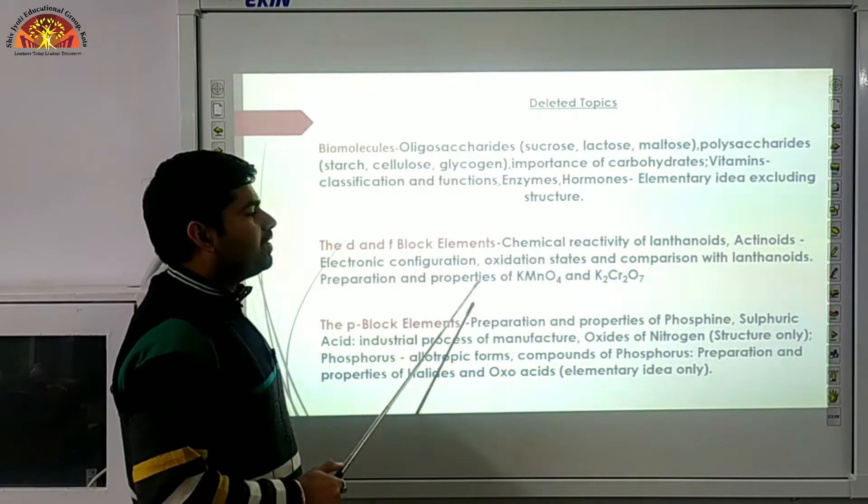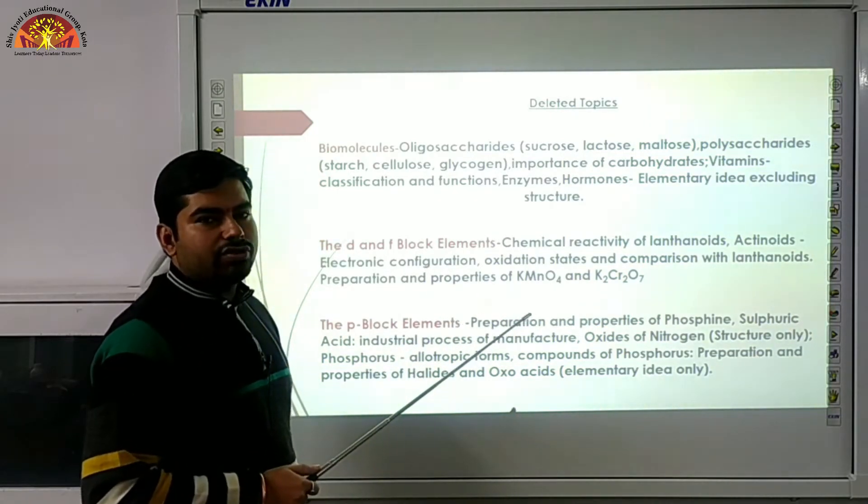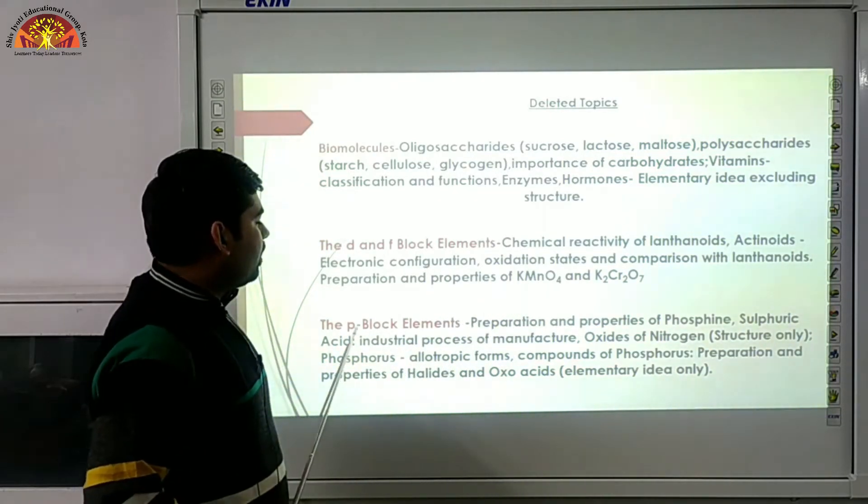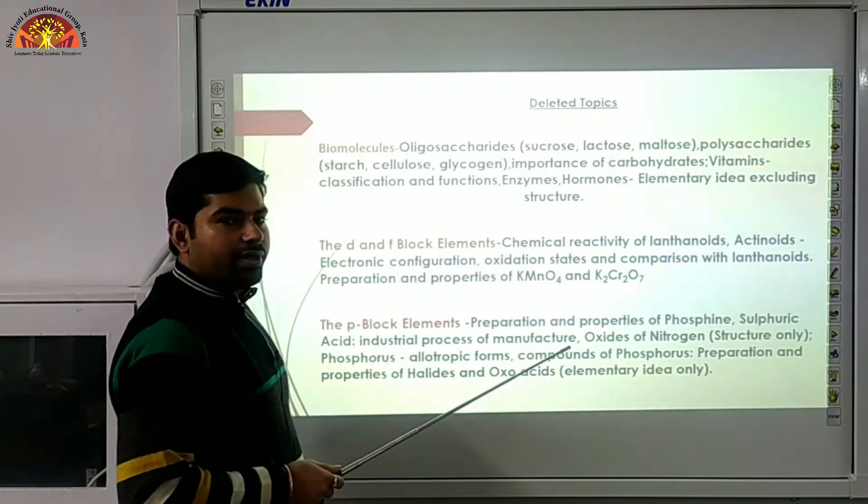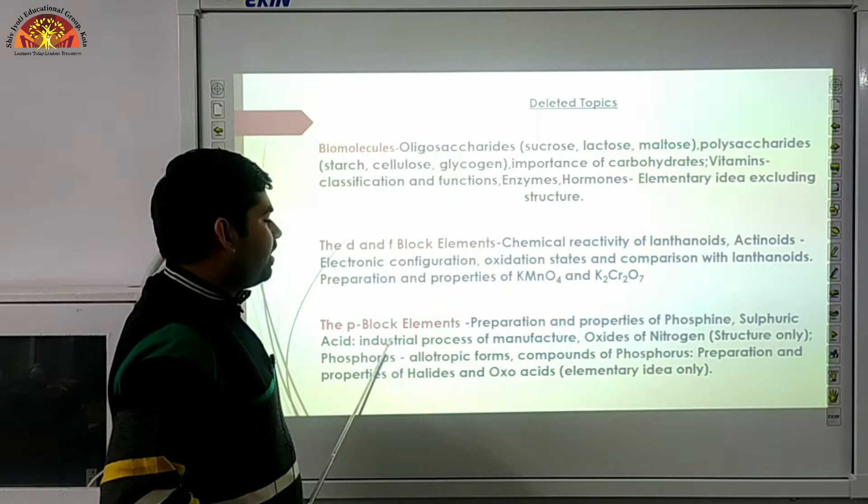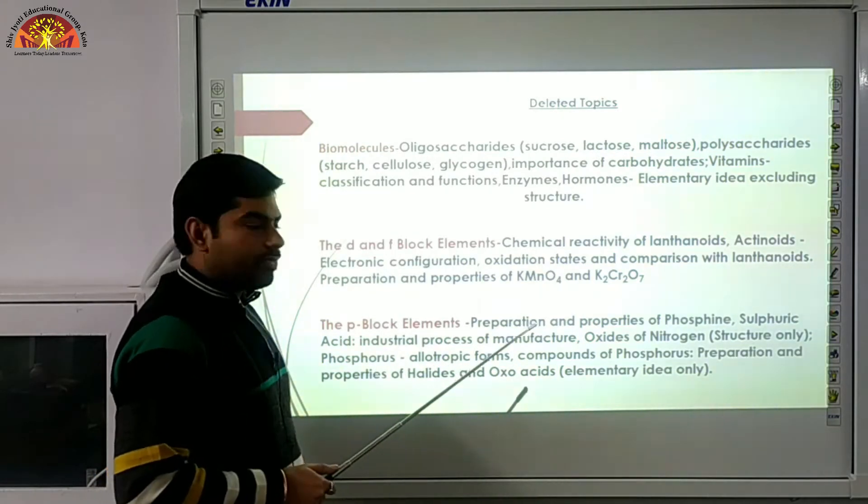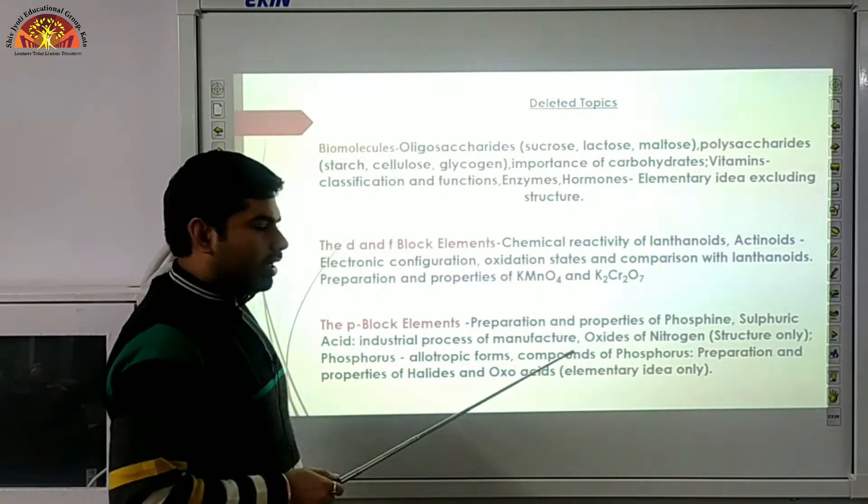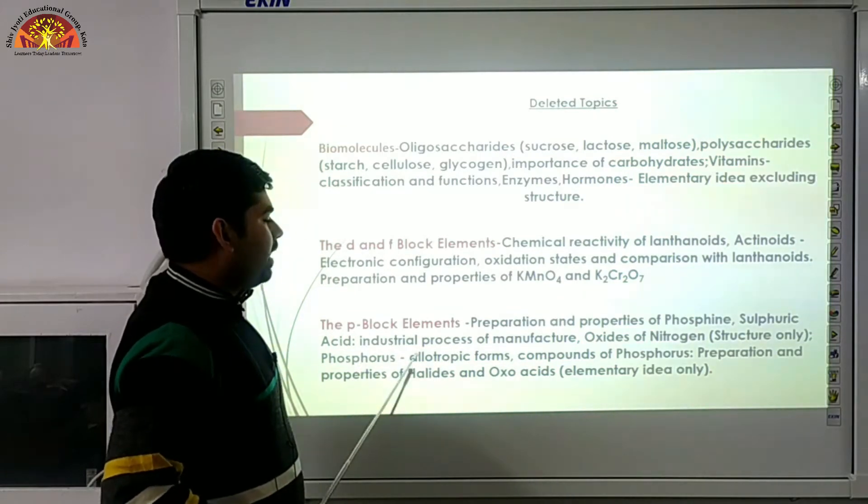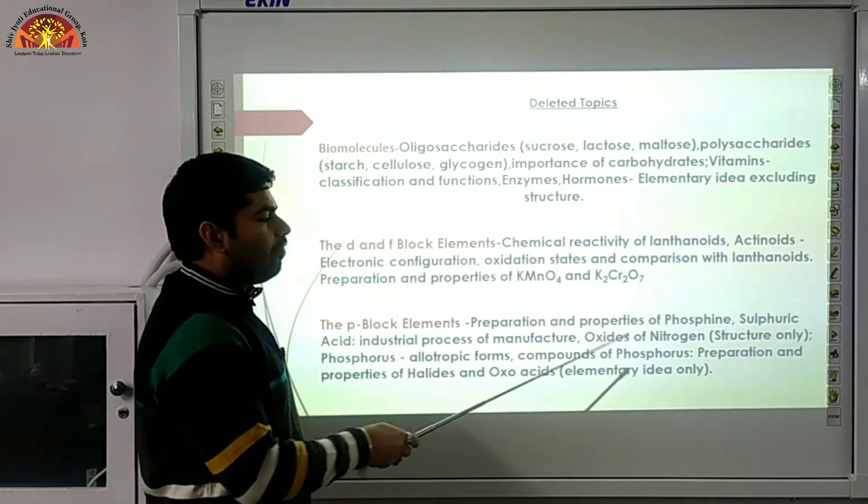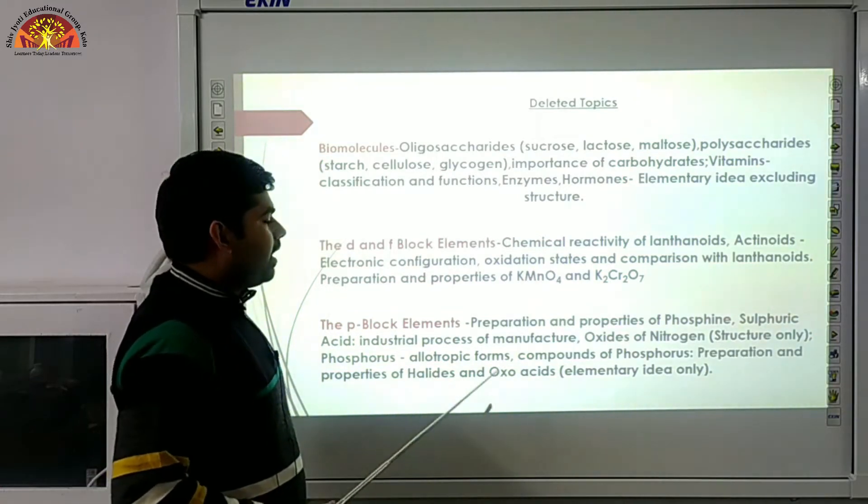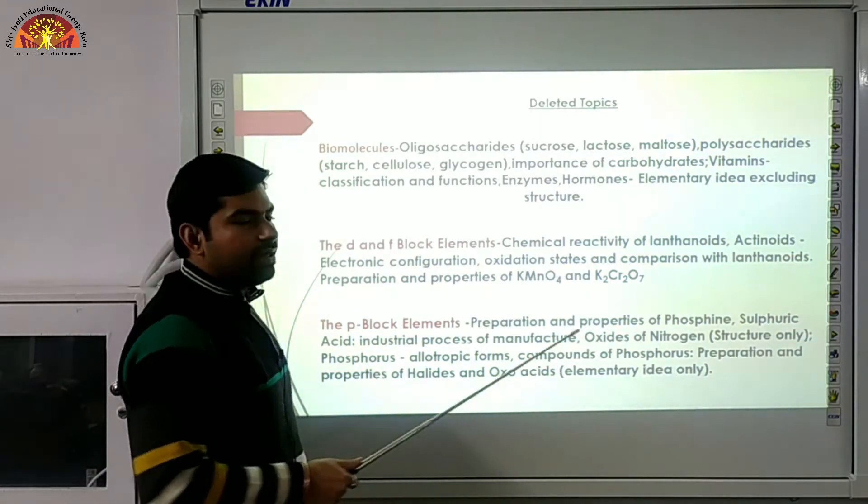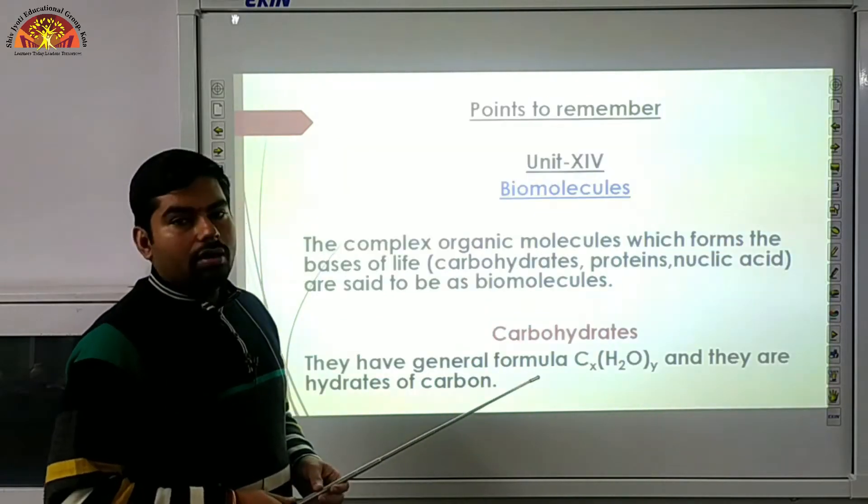Preparation and properties of KMnO4 and K2Cr2O7. And in the P block element, preparation and properties of phosphine, sulfuric acid, industrial process of manufacture, oxides of nitrogen structure only, phosphorus allotropic forms, compounds of phosphorus, preparation and properties of halides and oxoacids, elementary idea only.